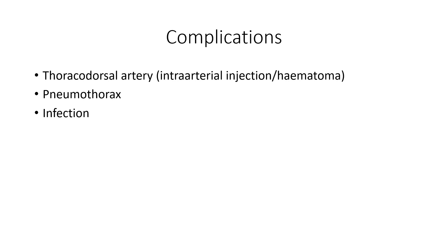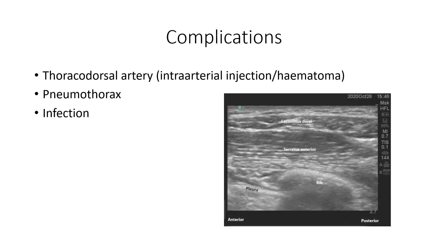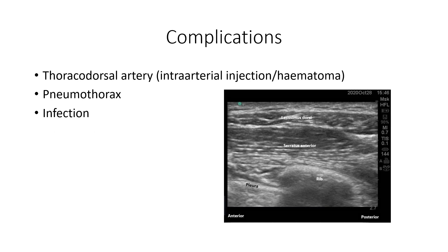Regarding complications from the serratus anterior plane block, there is one artery to watch out for: the thoracodorsal artery, which lies between the latissimus dorsi and serratus anterior. We must ensure our needle does not inject into it, to avoid hematoma or intra-arterial injection. Pneumothorax is also a risk, as is infection.